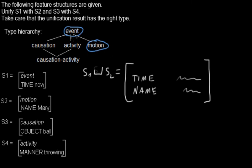So in this case we have event and motion, and the one that's lowest in the tree but has all of them above is motion. So in this case this will be of type motion.